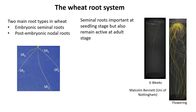Now we have lots of mutants, but how do we phenotype them? So we need to address the phenotyping bottleneck. To do that, I want to introduce you to the root architecture of wheat.